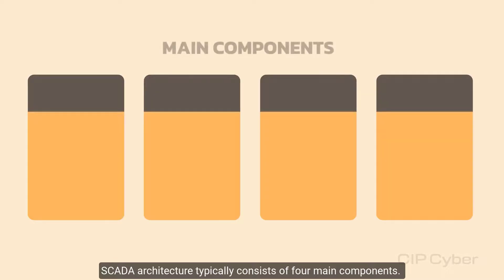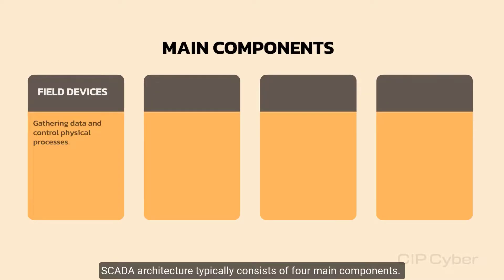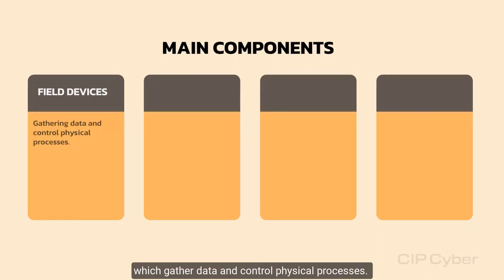SCADA architecture typically consists of four main components. First, field devices such as sensors and actuators, which gather data and control physical processes.